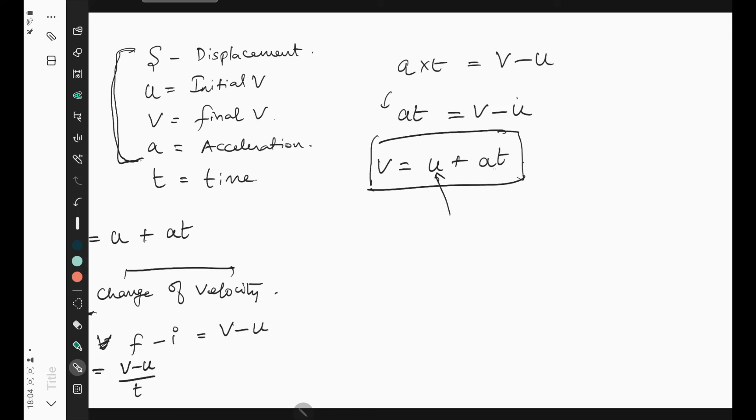What does it tell us? Given the initial velocity, given an acceleration a and the time t, I can find out what is my final velocity. This is equation one.